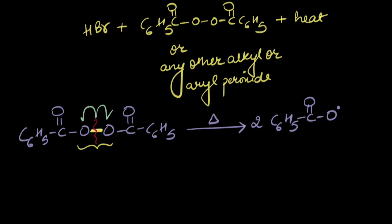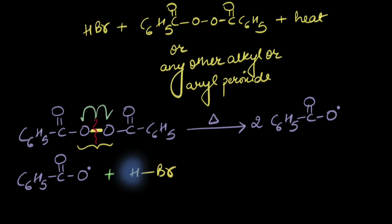Free radicals are really, really reactive intermediates. So once this free radical forms, it goes out looking for stability and it sees HBr. If it gets this H, it would form a stable molecule that is benzoic acid.